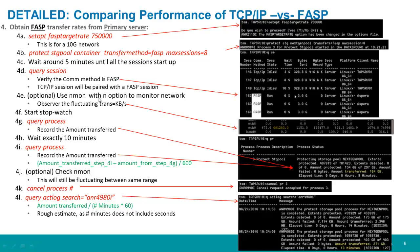Optionally, use nmon again to monitor kilobytes per second. Get out the stopwatch, issue a query process, wait exactly 10 minutes, then issue another query process. Take the amount of data transferred from both query processes — paying attention to whether it's gigabytes or kilobytes — and divide by 600 (10 minutes times 60 seconds). That gives a precise amount of data transferred to compare with TCP/IP.